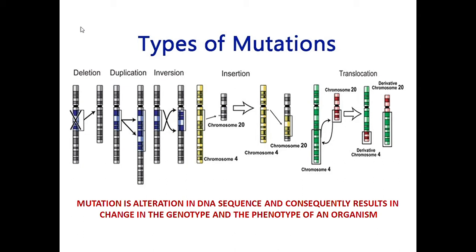Phenotype and genotype. The phenotype can be found from the DNA sequence. For example, if we have a gene, we can know about a disease. The gene is found within the DNA sequence.